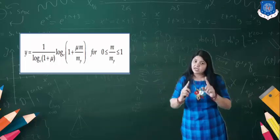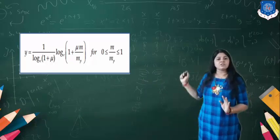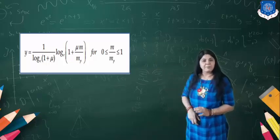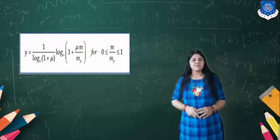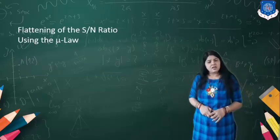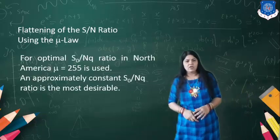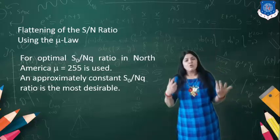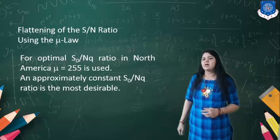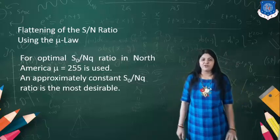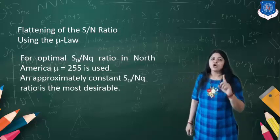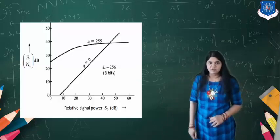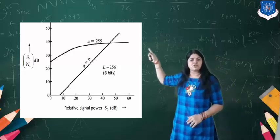The equation for mu-law that we must remember is: Y = (1 / log(1 + μ)) × log(1 + μ × |M/Mp|), for M/Mp between 0 and 1. For the optimum signal-to-quantization noise ratio in North America, mu = 255 is used so the signal output is good. This ratio is most desirable in all systems.